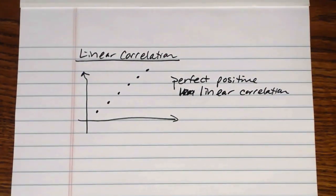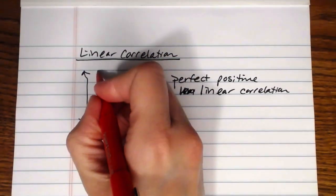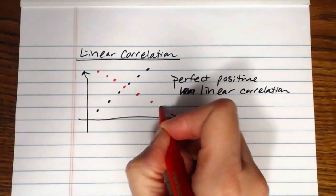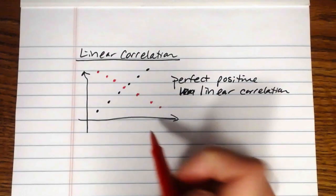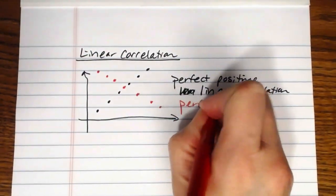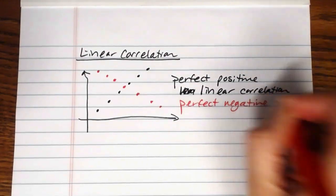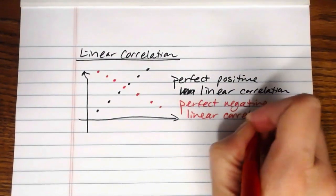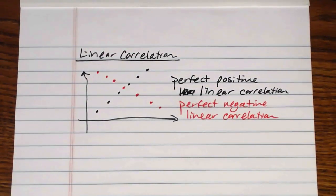Perfect positive linear correlation. Similarly, we could have a set of data that again all fall on the same straight line, but that line would have a negative slope, and that set of data would have perfect negative linear correlation. Now, for the most part when we talk about real world data, it's not going to follow a nice perfect straight line like that.